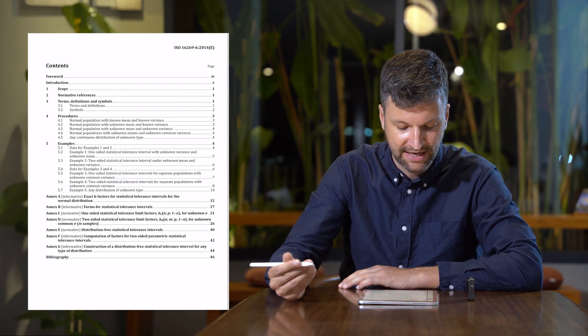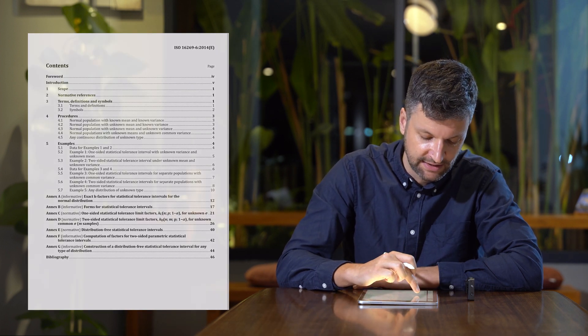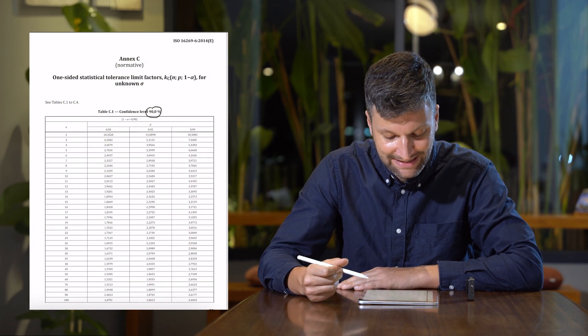For this example, we go with a one-sided statistical tolerance interval, and this is to be found in Annex C. You can see Annex C here.